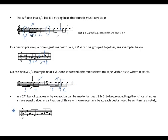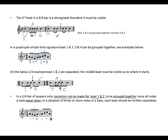In a 2/4 bar of quavers only, an exception can be made for beat 1 and 2 to be grouped together, since all notes have an equal value. This exception has a condition — all notes must have equal value. In a situation of 3 or more notes in a beat but with unequal values, each beat should be written separately.